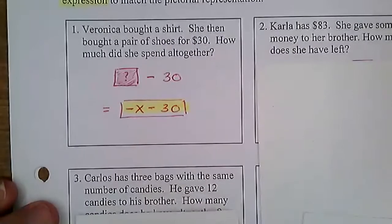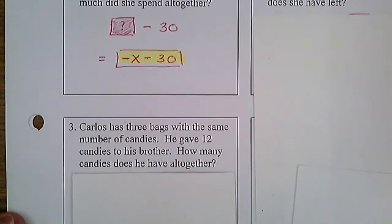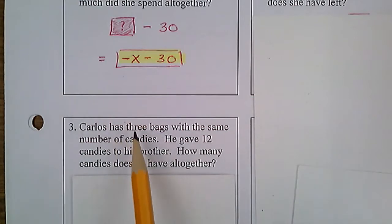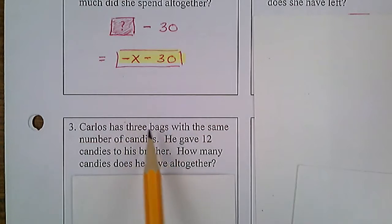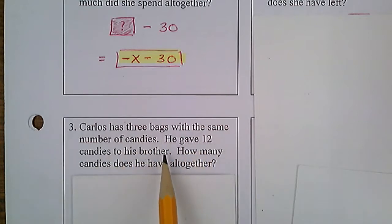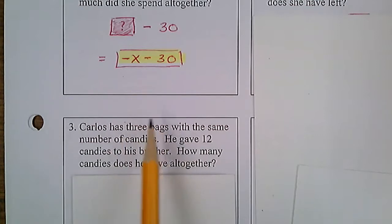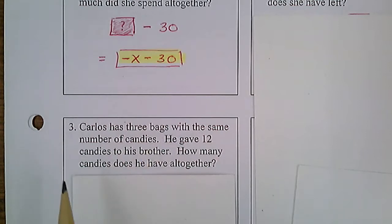I'm going to do number three with you. Carlos has three bags with the same number of candies — we could think of Halloween. He has three bags with the same number of candies, and he gave 12 candies to his brother. How many candies does he have altogether? He has three different bags, but they all have the same number. We don't know — each bag could have 50 pieces, 10 pieces, or 5 pieces of candy.